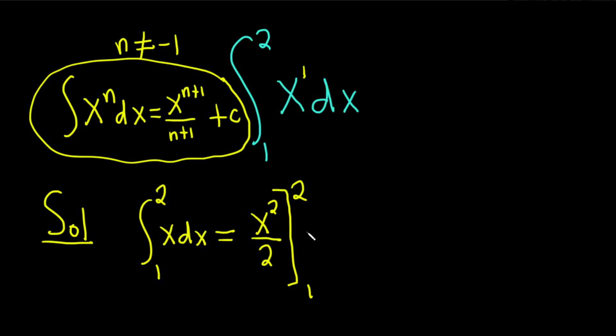You plug in the top number first, so that will be 2 squared over 2. Then you subtract and plug in the bottom number, so 1 squared over 2.